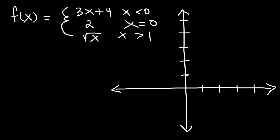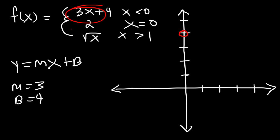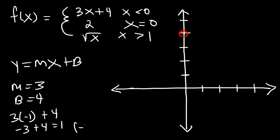Let's start with the linear piece. We have a linear equation y equals mx plus b where m is 3 and b is 4, so the y-intercept is 4 — when x is 0, y is 4. We're going to have an open circle at 0 comma 4, and we can only graph the left side. If we plug in x equals negative 1, the y value will be 3 times negative 1 plus 4, which is 1, giving the point negative 1 comma 1. When plotting a linear function you only need two points to graph it and then connect with a straight line.